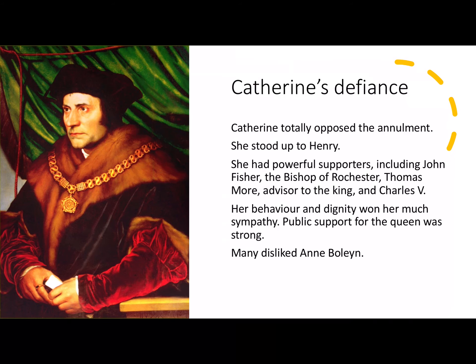Catherine totally opposed the annulment and was able to stand up to Henry because she had powerful supporters, including John Fisher, the highly respected Bishop of Rochester, and Thomas More, advisor to the King. Her behaviour and her dignity won her much sympathy, and public support for the Queen was also strong, with many disliking Anne Boleyn. As Charles V was her nephew, she also had the backing of Europe's most powerful man.